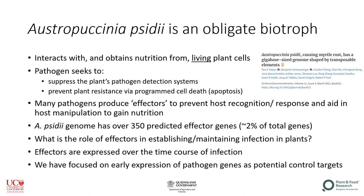This pathogen genome has over 350 predicted effector genes, which is about two percent of the total — there are about 19,000 genes in this pathogen — that's about average for a rust pathogen. So we're trying to investigate what the role of effectors is in the establishment and maintenance of infection in plants. Effectors are expressed over the time course of infection, and we're trying to focus as much as possible on early expression of pathogen genes as potential control targets.